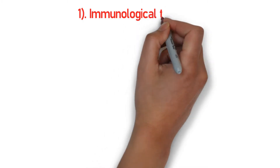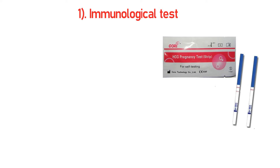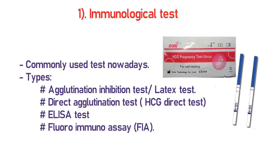Immunological tests are the commonly used tests nowadays. The types of immunologic tests include: the pregnancy test kit, which is easily available at the nearest medical store; next, the Enzyme-Linked Immunosorbent Assay, which is the ELISA test; and finally, the Fluido Immuno Assay, abbreviated as FIA.